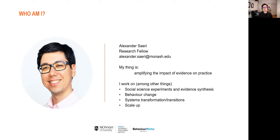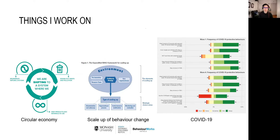My expertise is really in methodology — asking interesting questions. I work on social science experiments, evidence synthesis, systems, transformations and transitions. I'm working on the circular economy, trying to understand the key barriers for businesses in adopting circular economy practices — connecting businesses, academics, and government in thinking about how we can transition to the circular economy. I've also been working on how we could scale up behavior change interventions, which has a lot of overlap with the idea of implementation.